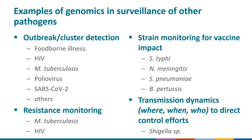For many STI pathogens, whole genome sequencing has moved beyond research and is being translated into public health and surveillance. The most common and mature use is detection of outbreaks or clusters — done for foodborne illnesses through PulseNet and as part of molecular cluster detection in HIV. Surveillance of antimicrobial resistance is done for tuberculosis and HIV. Strain monitoring for vaccine impact evaluation is done for several vaccine-preventable pathogens. And genomic data can be used to understand transmission dynamics — for example, identifying intercontinental spread of drug-resistant Shigella.